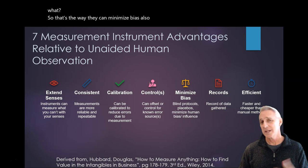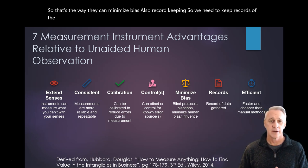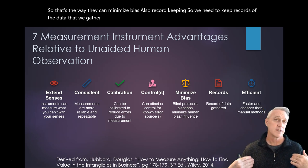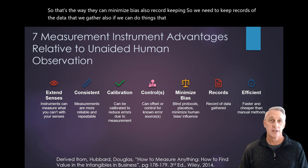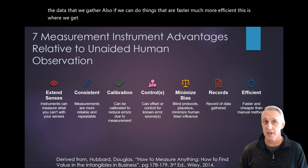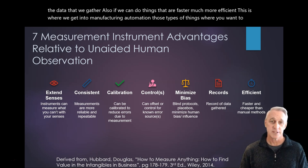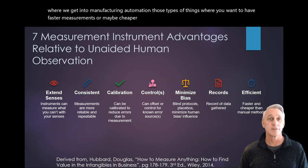Also record keeping. So we need to keep records of the data that we gather. Also, if we can do things that are faster, much more efficient. This is where we get into manufacturing automation, those types of things where you want to have faster measurements or maybe cheaper than if you were trying to do something manually.